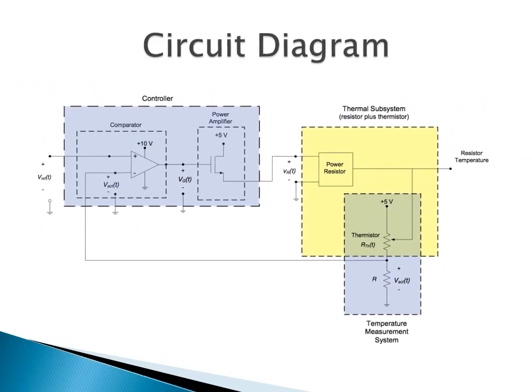The circuit shown here is an example of an on-off controller, also known as a bang-bang controller, which can be used to control the temperature of the room. In this circuit the power resistor is the heating element. If the temperature of the room is lower than the reference temperature, the power resistor would be conducting and the room would heat up. If the temperature of the room is higher than the reference temperature, the power resistor would be switched off and the room will cool down. Depending upon the temperature of the room, the thermistor would have different resistance, and depending upon the resistance, different amounts of current would flow from 5V to ground.